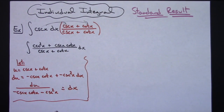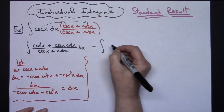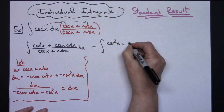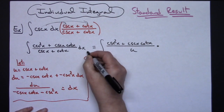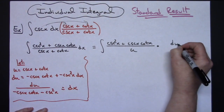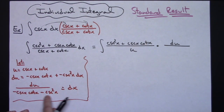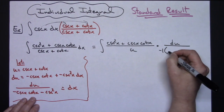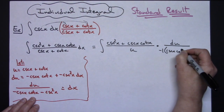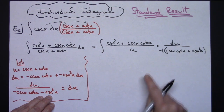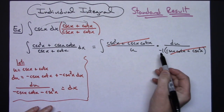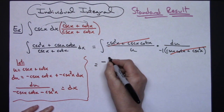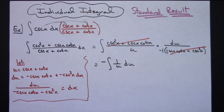Coming back up, the numerator is still cosecant squared x plus cosecant x cotangent x. The denominator we replace with u. For dx, I'm going to factor out a negative 1 so that this will match, leaving a positive cosecant x cotangent x plus cosecant squared x. Factoring out that negative creates the two terms that can be crossed out with the numerator.